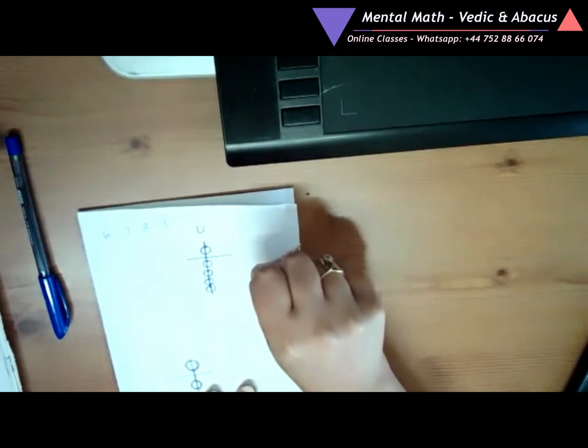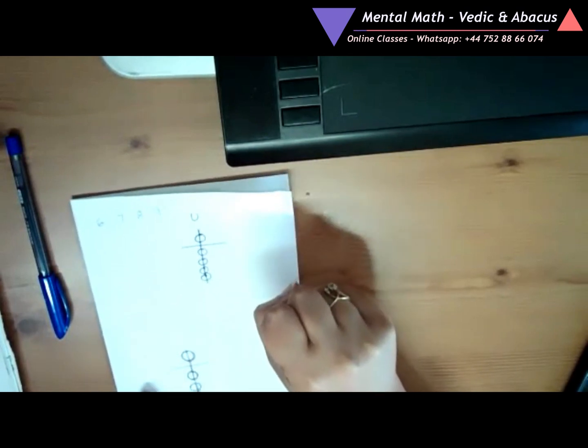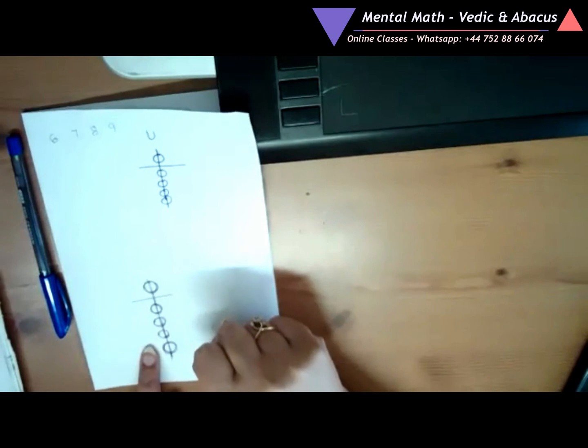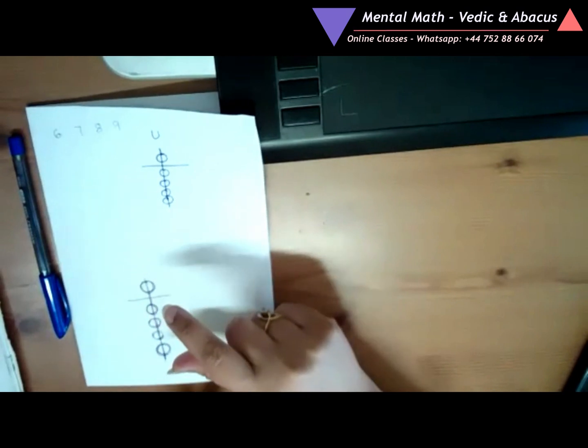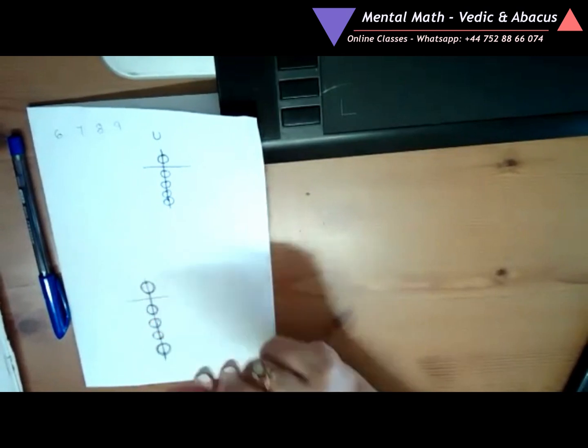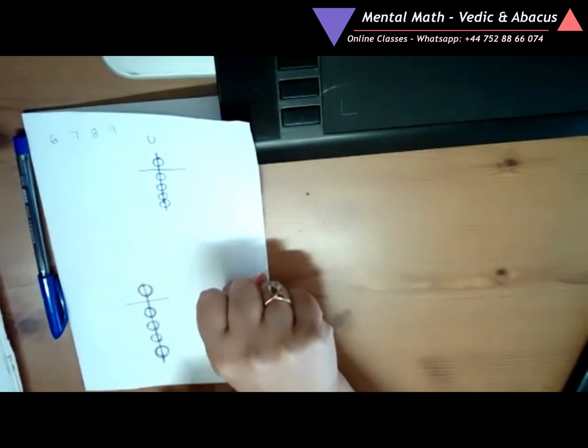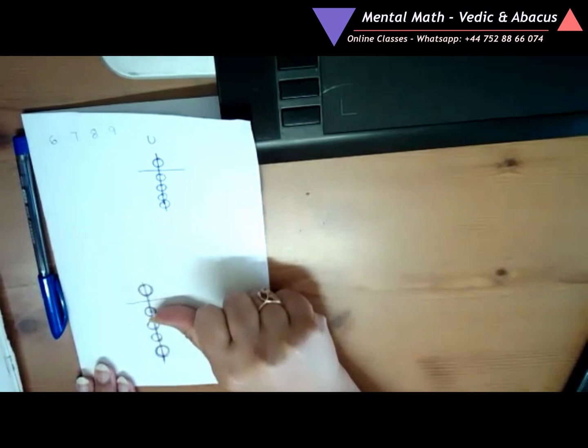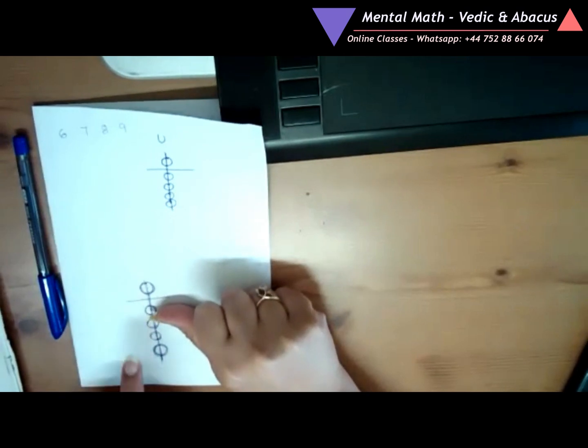Let me show all the numbers now. I will be showing on this abacus because this is the size of the bead that matches my finger and thumb. Zero. One. Now I'm pointing on the first bead.